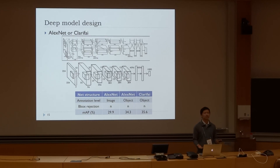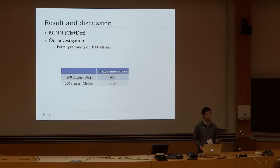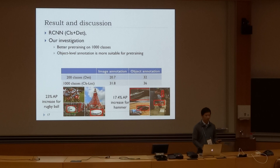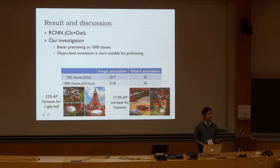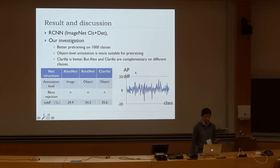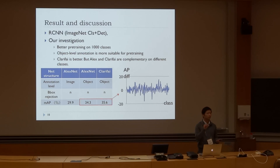For the model design, we find that ARIFI is much better than AlexNet. In terms of number of classes, we find that more classes is better. Object-level annotation is actually better than image-level annotation. We also find that ARIFI performs better than AlexNet. However, our observation is that the mean AP difference is small — about just 1.3.